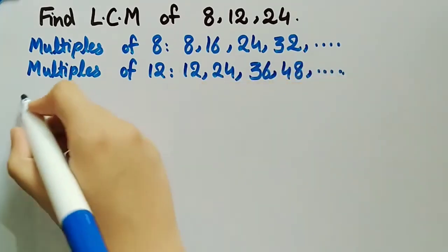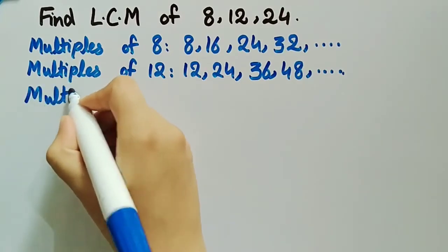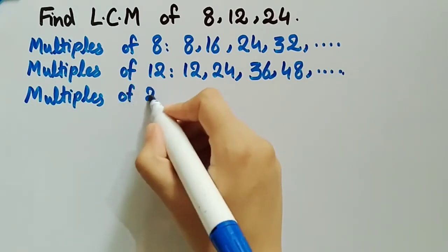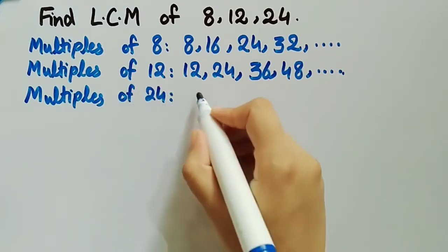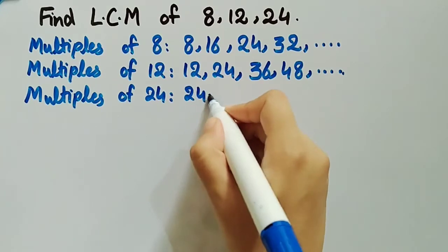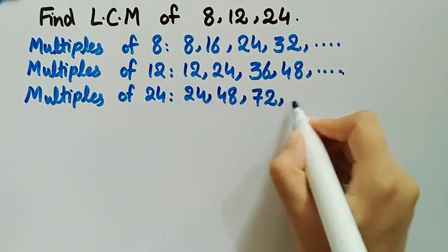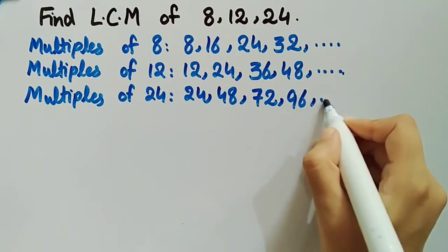Now we will write multiples of 24, which are 24, 48, 72, 96, and so on.